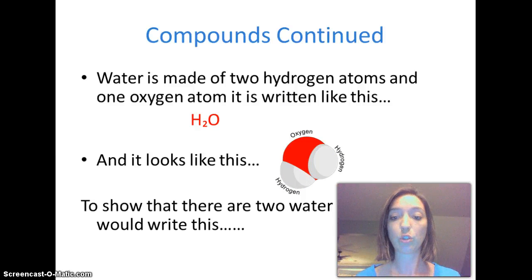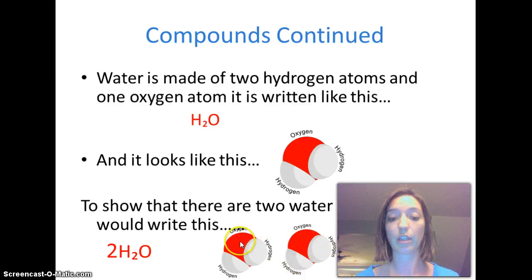And so if we had two water molecules, we would write it by putting a two in front of our hydrogen or our H. So that means there are two water molecules. So when you look at them, there's one, two, three, four hydrogen and there's two oxygen. So just like in math,